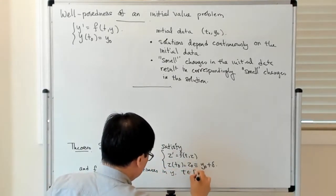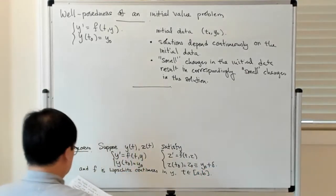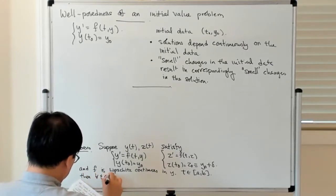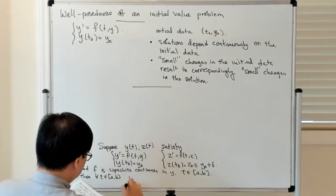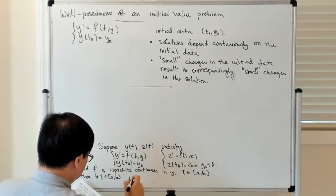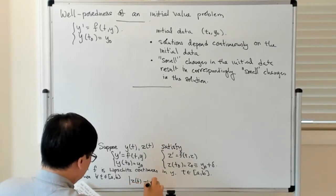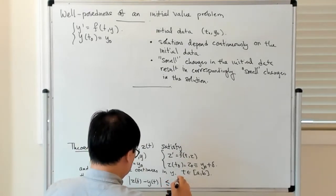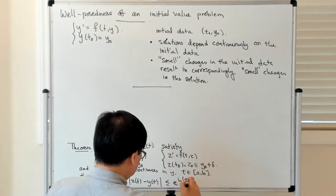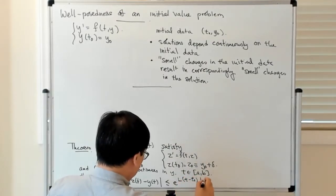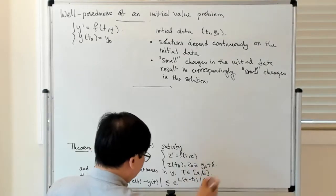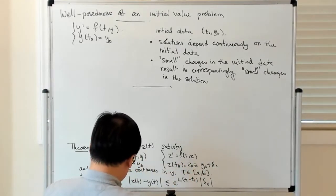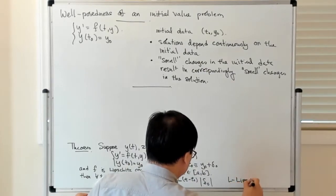We want f to be Lipschitz continuous in y and t to be in the interval from a to b. Then for all t in [a, b], the difference |z(t) − y(t)| is less than or equal to e^(L(t − t₀)) times |δ₀|, where δ₀ is the difference in initial values y₀ and z₀, and L is the Lipschitz constant.